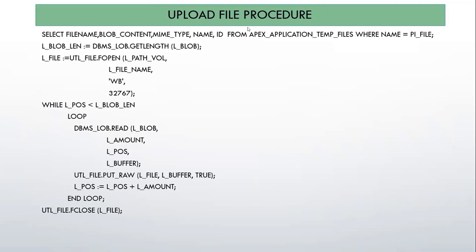Here I will explain a little bit about the procedure and method I'm using to upload the file. Upload file in Apex will not upload the file directly to the directory. First it will upload all your files in Apex Application Temp File. Because once you add a file browse item type on your page, it will give you two options only: either you want to save your file in BLOB or you want to save your file in Apex Application Temp File.